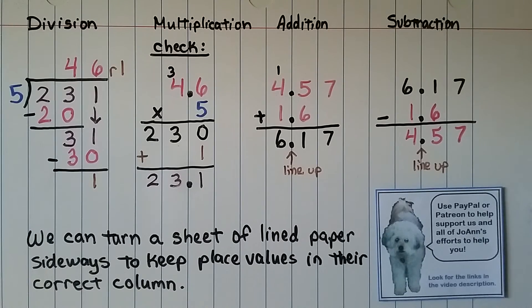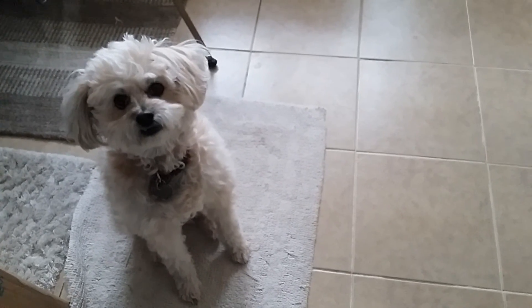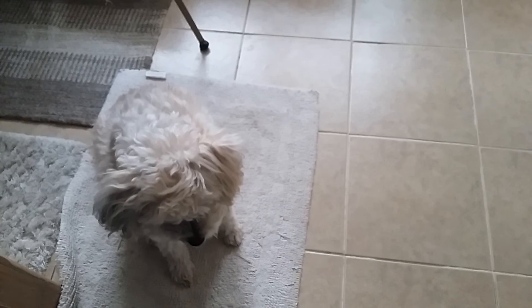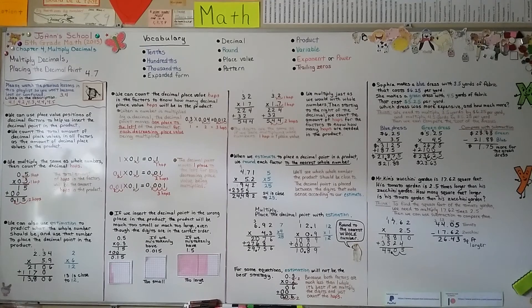Remember, you can turn a sheet of lined paper sideways to keep place values in the correct column. You can use PayPal or Patreon to help support my efforts. Our next lesson, 4.8, we're going to talk about zeros in the product. I hope I'll see you there and I hope you have a wonderful day.